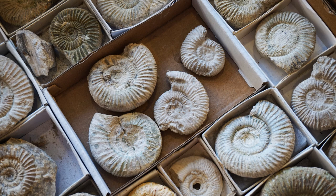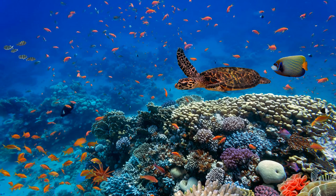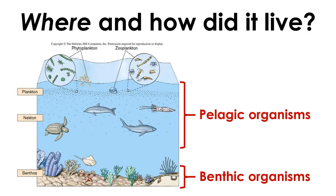Since most of the fossil record consists of remains of marine life, we'll focus on the life and times of organisms in the ocean. When it comes to where and how organisms live in the ocean, we distinguish between pelagic and benthic taxa. While benthic organisms live down on the sea floor, pelagic organisms live up in the water column.